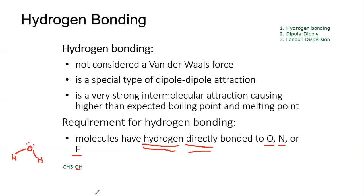If the hydrogen is attached to a carbon or some other element, it doesn't count — it has to be oxygen, nitrogen, or fluorine. For nitrogen, consider ammonia (NH3): we have at least one hydrogen directly bound to the nitrogen, so ammonia would have hydrogen bonding. For fluorine, there's only one example that can hydrogen bond: HF. So again, hydrogen bonding is very specific — it has to be a hydrogen directly attached to an oxygen, nitrogen, or fluorine.